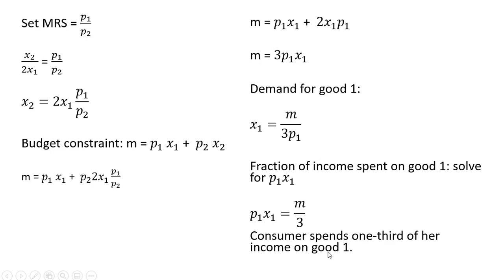So the answer is that this consumer spends one-third of their income on good 1, which implies they spend two-thirds of their income on good 2.